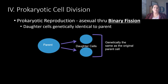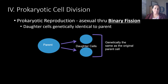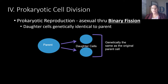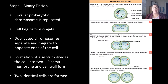Mitosis applies to eukaryotic cells — cells that have a nucleus. But what about prokaryotic cells like bacteria, which don't contain a nucleus? They also go from one cell to two, two to four, to populate an area. Prokaryotes do asexual reproduction by the process called binary fission. 'Bi' means two, so we divide into two; 'fission' means to break apart. The daughter cells are genetically identical to the parent.